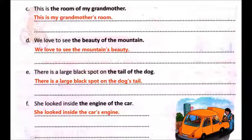With this we have learnt the two ways — how we can write possessive words by adding apostrophe S and by using 'of'.